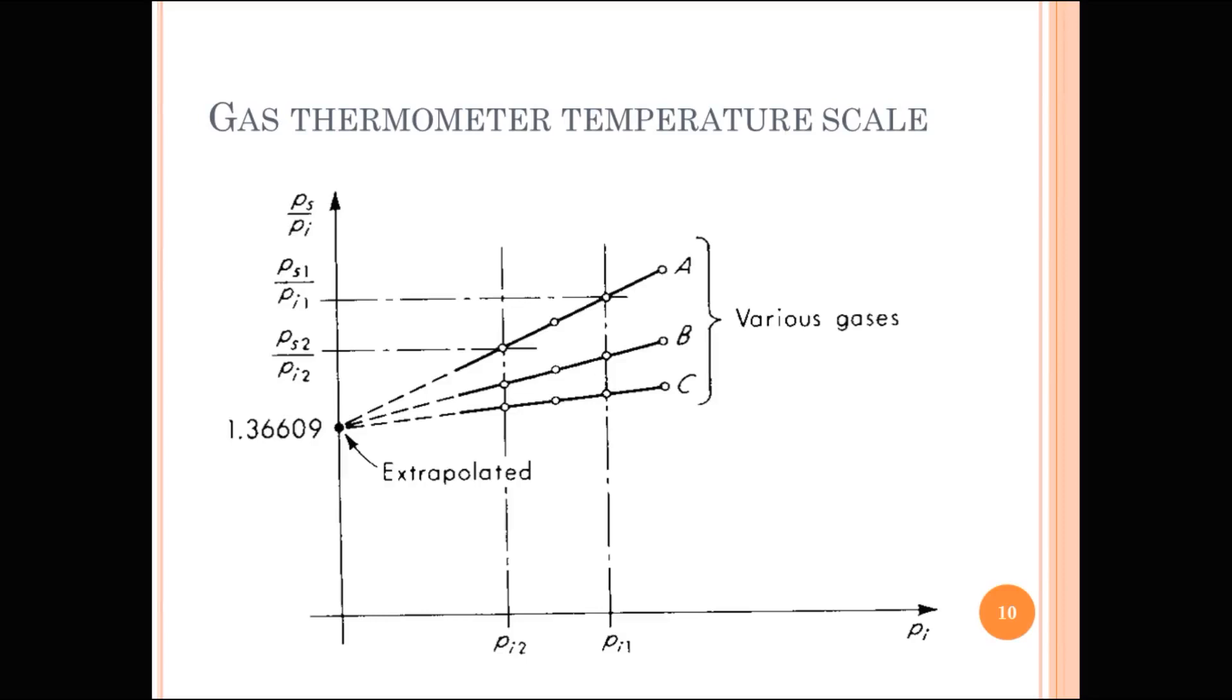Real gases show ideal gas behavior at zero pressure condition and the zero pressure point is obtained by extrapolating the curve. This zero pressure point has a relevance that it is taken as the true value of the pressure ratio corresponding to steam point temperature divided by ice point temperature ratio. If this experiment is repeated with different gases, represented as B and C, all the curves intersect at the same point which means the procedure is independent of the type of gas used. This is very important.